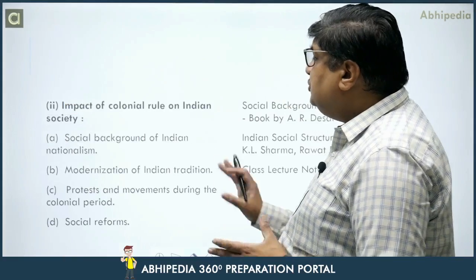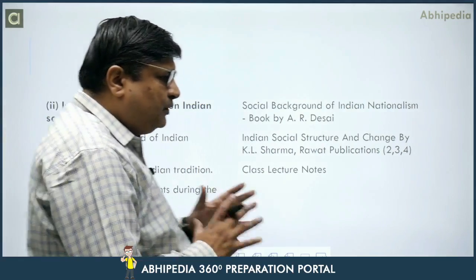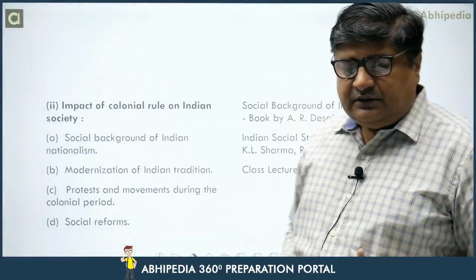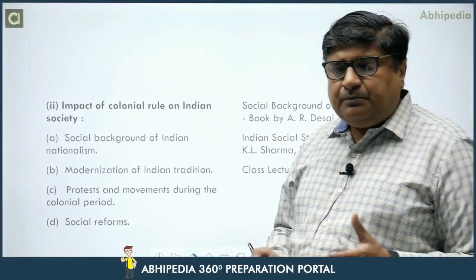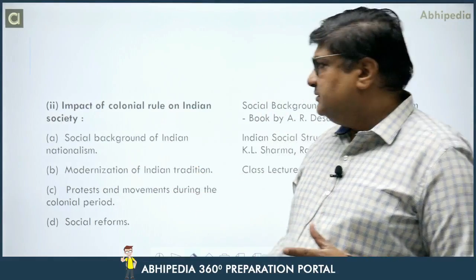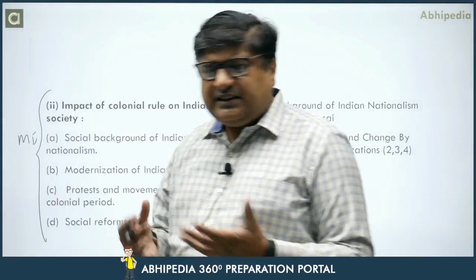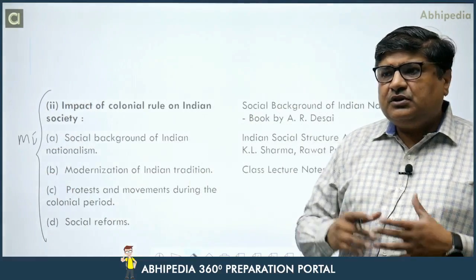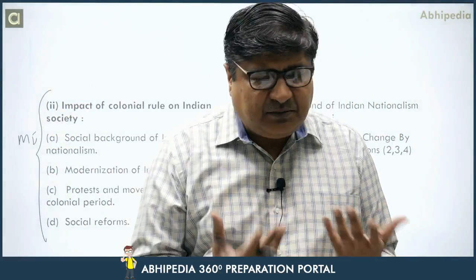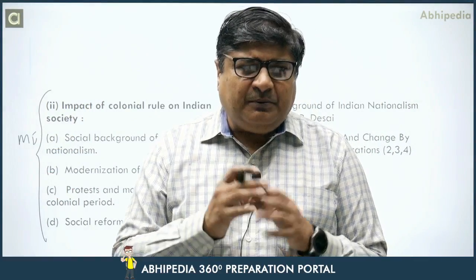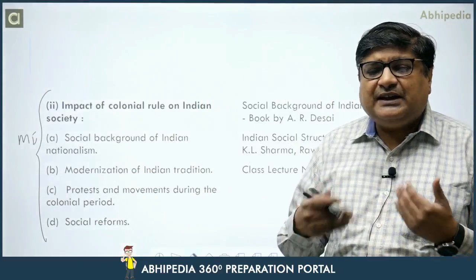The second chapter of Section A is 'Impact of Colonial Rule on Indian Society.' This is a somewhat scattered chapter with six topics, including social background of Indian nationalism and modernization. This is a medium important chapter. Questions that come from it tend to be scattered and big — the word limit feels less for the question size. So I don't recommend spending too much extra time on it.